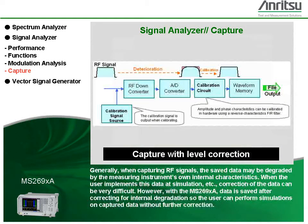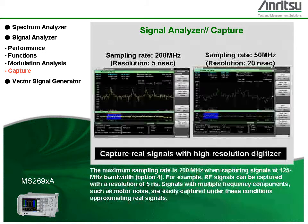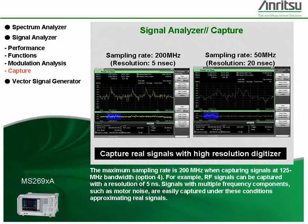Generally, when capturing RF signals, the saved data may be degraded by the measuring instrument's own internal characteristics, making correction of the data very difficult when used in simulation. However, with the MS269XA, data is saved after correcting for internal degradation so the user can perform simulations on captured data without further correction. The maximum sampling rate is 200 MHz when capturing signals at 125 MHz bandwidth, allowing RF signals to be captured with a resolution of 5 nanoseconds.